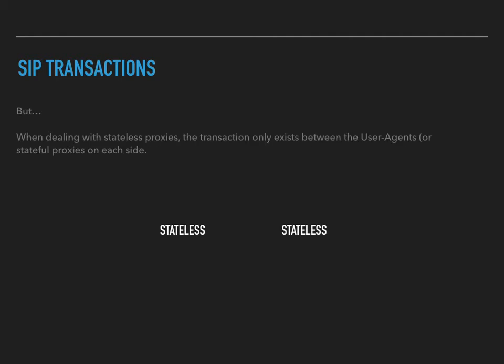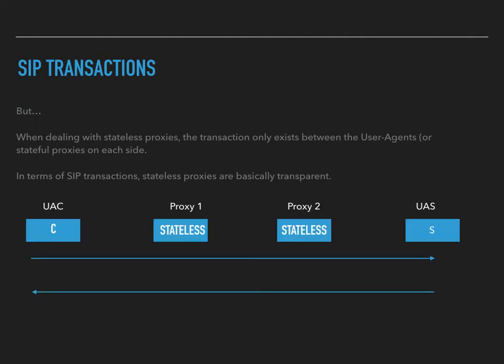But if we are dealing with stateless proxies, the transaction only exists between the user agents and the stateful proxies on each side — it could be a SIP server or a back-to-back user agent. The fact is, when going through a stateless proxy, in terms of SIP transactions, stateless proxies are basically transparent. The UAC sends that invite or request and it goes through proxy 1, which just forwards it. Because it's a stateless proxy, it doesn't give any kind of provisional response. Proxy 1 routes it to proxy 2, again no provisional response, and it makes it all the way up to the UAS. The UAS responds back using what is set within the Via headers for response routing.